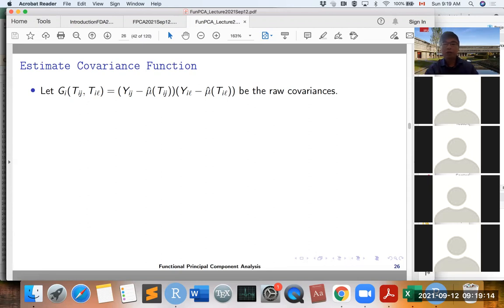We can first calculate the raw covariances. So the raw covariance is the product of (Y_IJ minus the mean function) times (Y_IL minus the mean function). So this we call it G_I. For each pair of time points T_IJ and T_IL, we can calculate this G_I. And then we can calculate that the expectation of G_I equals the covariance of X_I at T_IJ and X_I at T_IL plus sigma squared times delta_JL. So delta_JL equals 1 if J equals L, and delta_JL equals 0 if J not equal to L.